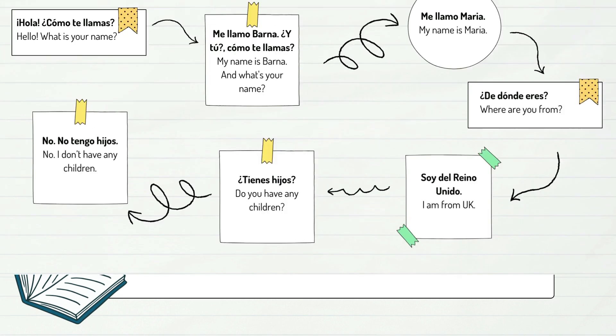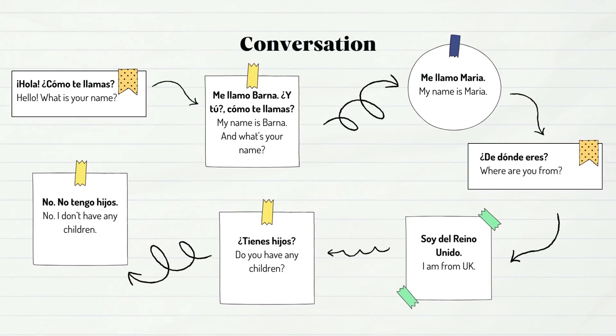So let's build a simple conversation. Hola, ¿cómo te llamas? Me llamo Barna. ¿Y tú? ¿Cómo te llamas? Me llamo María. ¿De dónde eres? Soy del Reino Unido. ¿Tienes hijos? No, no tengo hijos.